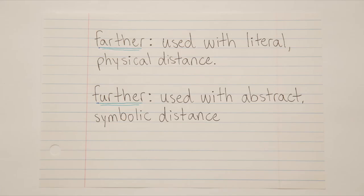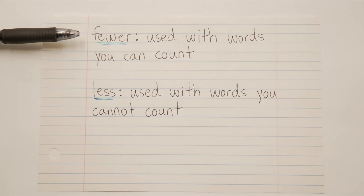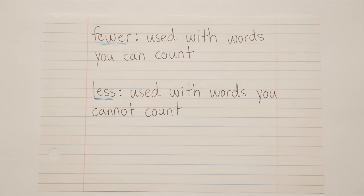Moving on to our last pair, we have fewer and less. For this one, you have to get very literal — you can't just imagine the sentence in your head. Instead, you have to actually look at the literal words on the page. With words that we can count, we use fewer. With words that we cannot count, we use less. And again, you have to be very literal with this.